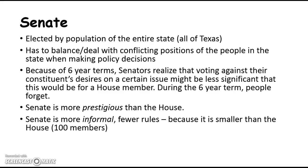The Senate is elected by the population of the entire state, and every state has two senators. Senators must balance conflicting positions of the people in the state — for example, California has more liberal voters on the coastal areas and more conservative voters inland, so senators have to appeal to both. Senators are less concerned about an unpopular vote because they serve six-year terms; people may not hold a grudge. The Senate is more prestigious and more informal, with fewer rules because it has fewer members.